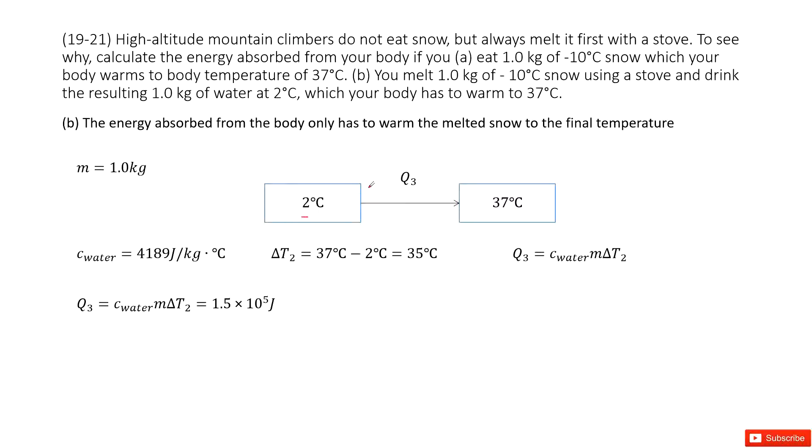Your body only needs to heat the water from 2 degrees to 37 degrees. The temperature change is 35 degrees. We can use C_m delta T. Delta T is given, mass is given, specific heat of water you can get there. Therefore, you can get Q3, just input all the known quantities.